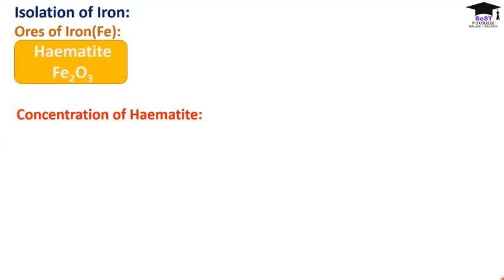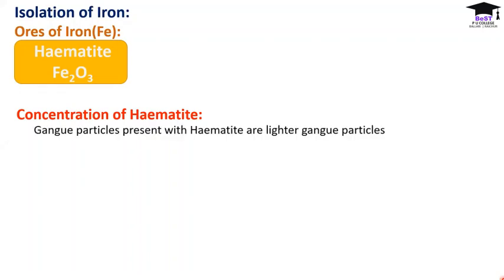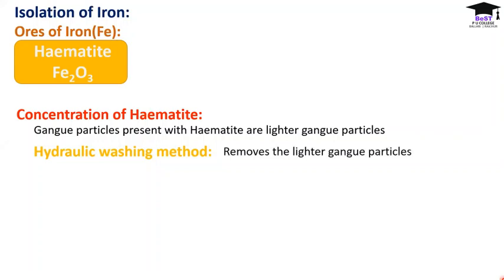Concentration of hematite: since hematite is a heavy oxide ore and the gangue particles are lighter, it is concentrated by hydraulic washing. The lighter gangue particles are removed by the flow of water, leaving behind concentrated hematite.